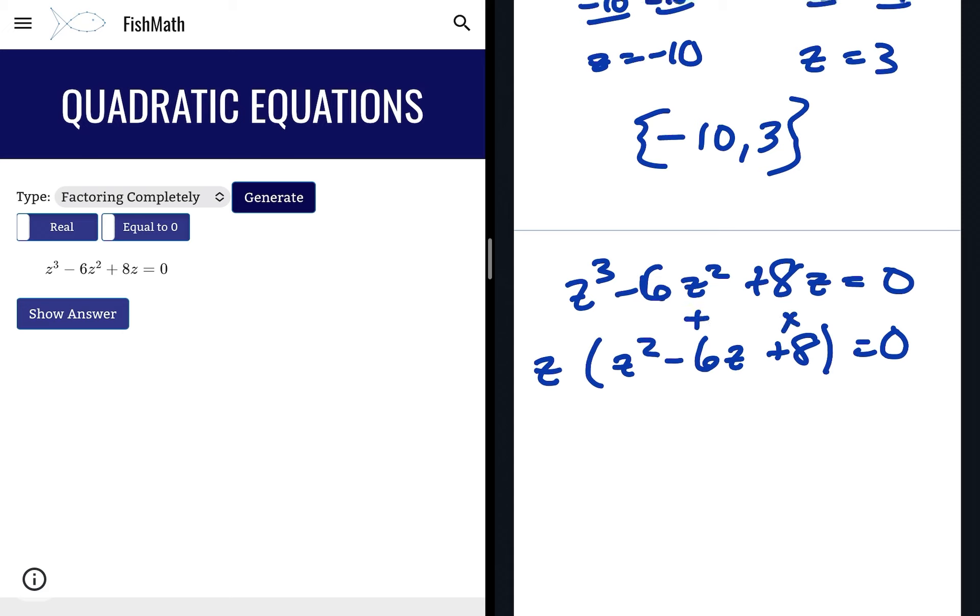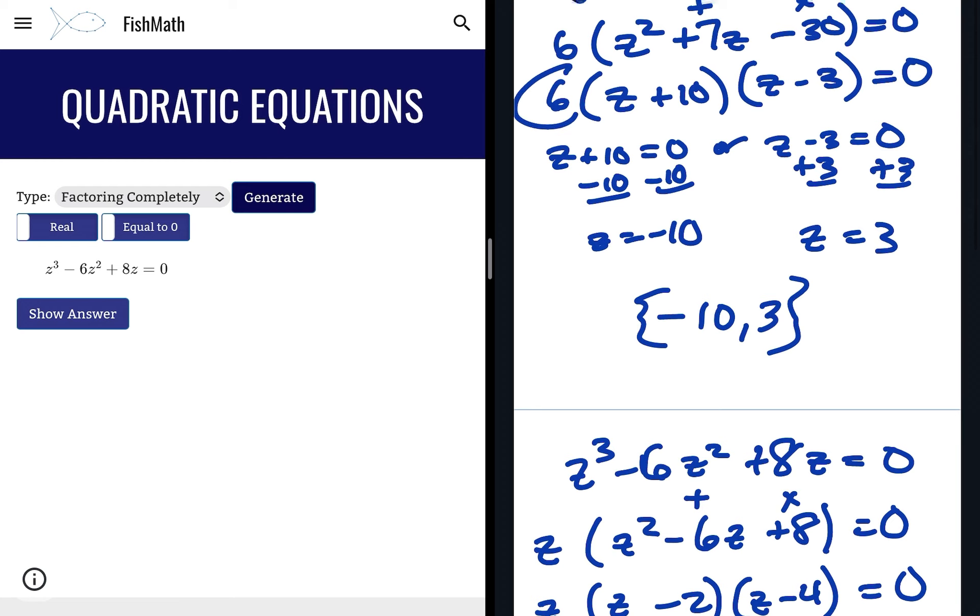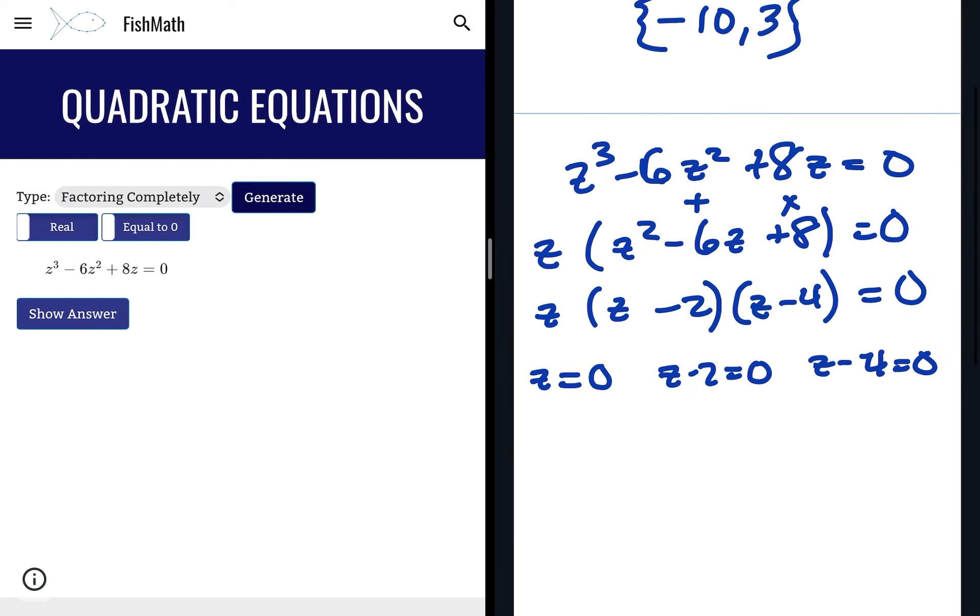It multiplies to 8 and adds to -6, so that would be, keeping the z out front, z times (z - 2)(z - 4) since those two multiply to a positive 8 and add to a negative 6. Now we set all of them equal to 0: z = 0, z - 2 = 0, z - 4 = 0. The only reason I didn't set them all equal to 0 before is because 6 can't equal 0, but z can equal 0. So that's one option, or z = 2 is another option, or z = 4 is a third option.